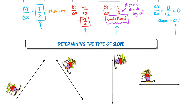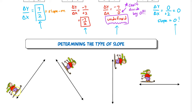The next part of the lesson is determining the type of slope from a graphic representation of a linear equation. Every type of line looks a little different. When we read from left to right, a line can go uphill, downhill, straight up and down like a vertical line, or straight across like a horizontal line. To help remember the types of slope, imagine a skier going across the page from left to right.